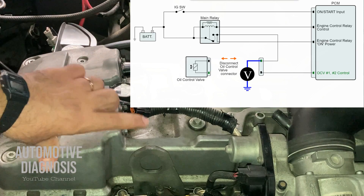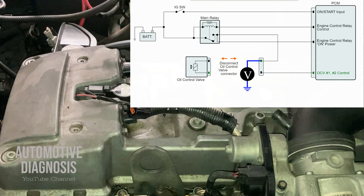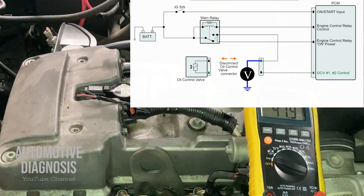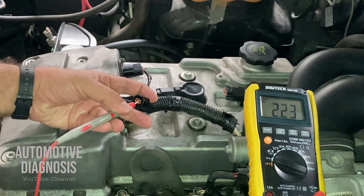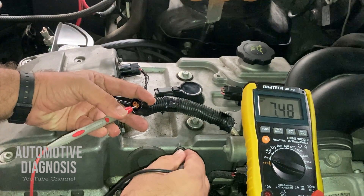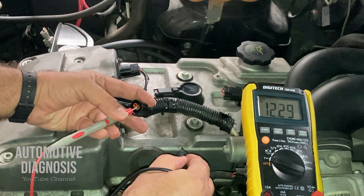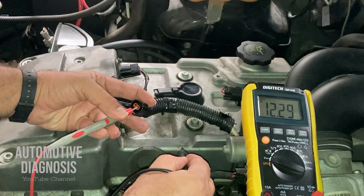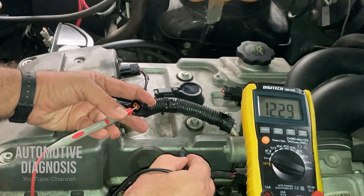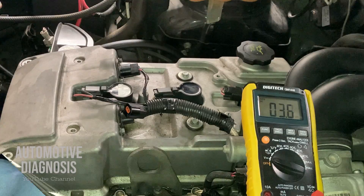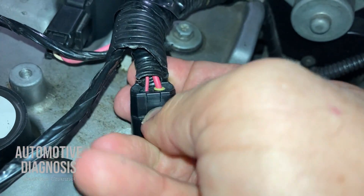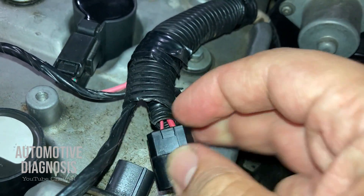When the engine is running, anytime the ECM wants to control the solenoid valve, it provides ground from the other wire. The first thing to check is the power supply on the VVT solenoid valve — make sure battery voltage is provided. Use the multimeter set on voltage, red probe on the positive pin and black on body ground. As you can see, I'm getting battery voltage. If you're not getting anything, it means the power supply line is shorted to ground or open, and you need to chase the wiring back to find the fault.